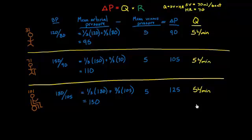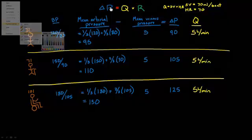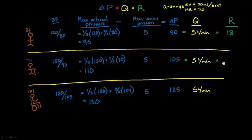Using δP = Q × R: if δP is 90 and Q is 5, then resistance equals 18 — because 18 times 5 is 90. At age 71, 105 divided by 5 gives a resistance of 21. And at age 101, it works out to 25. So my doctor told me my blood pressure is rising, and assuming mean venous pressure and cardiac output stay the same, my resistance has gone up over time. Let's change screens and figure out how that could possibly happen.